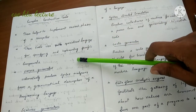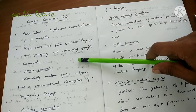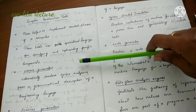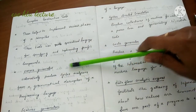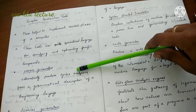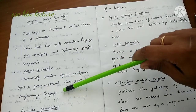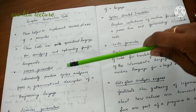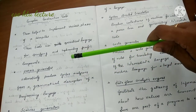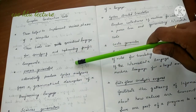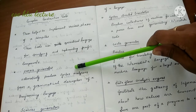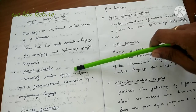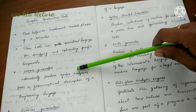The first construction tool is the Parser Generator. This automatically produces a syntax analyzer from a grammatical description of the programming language.